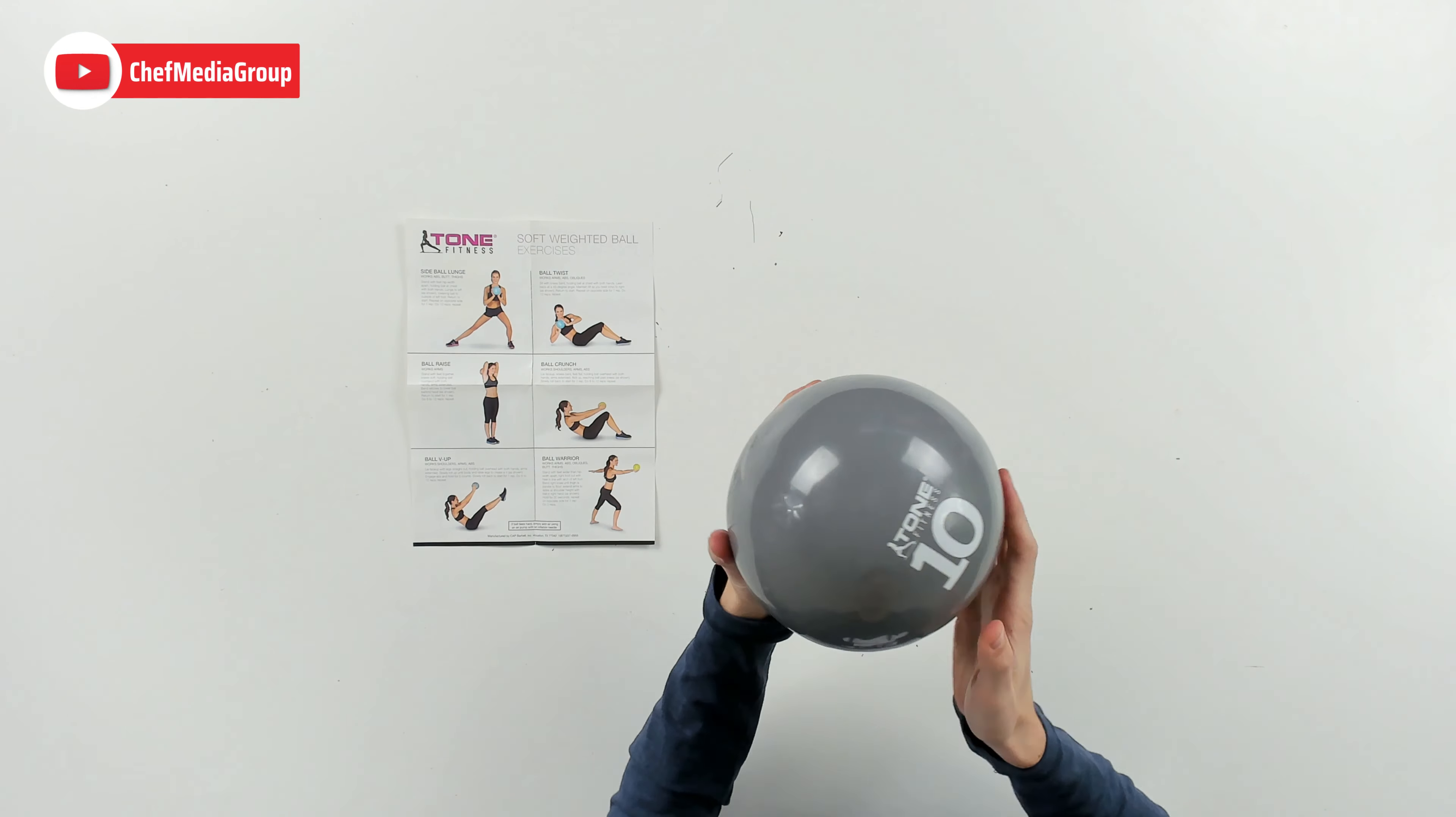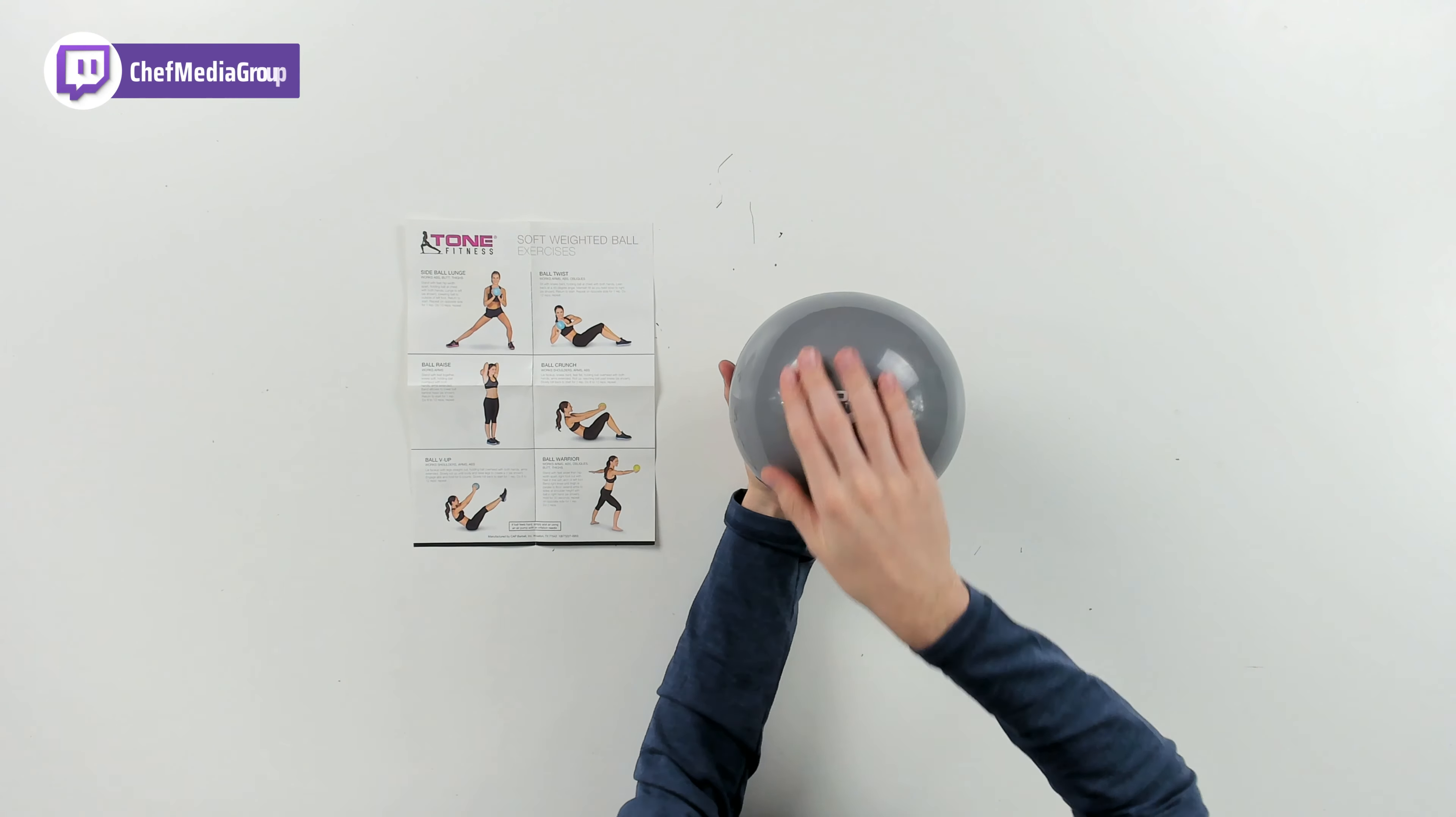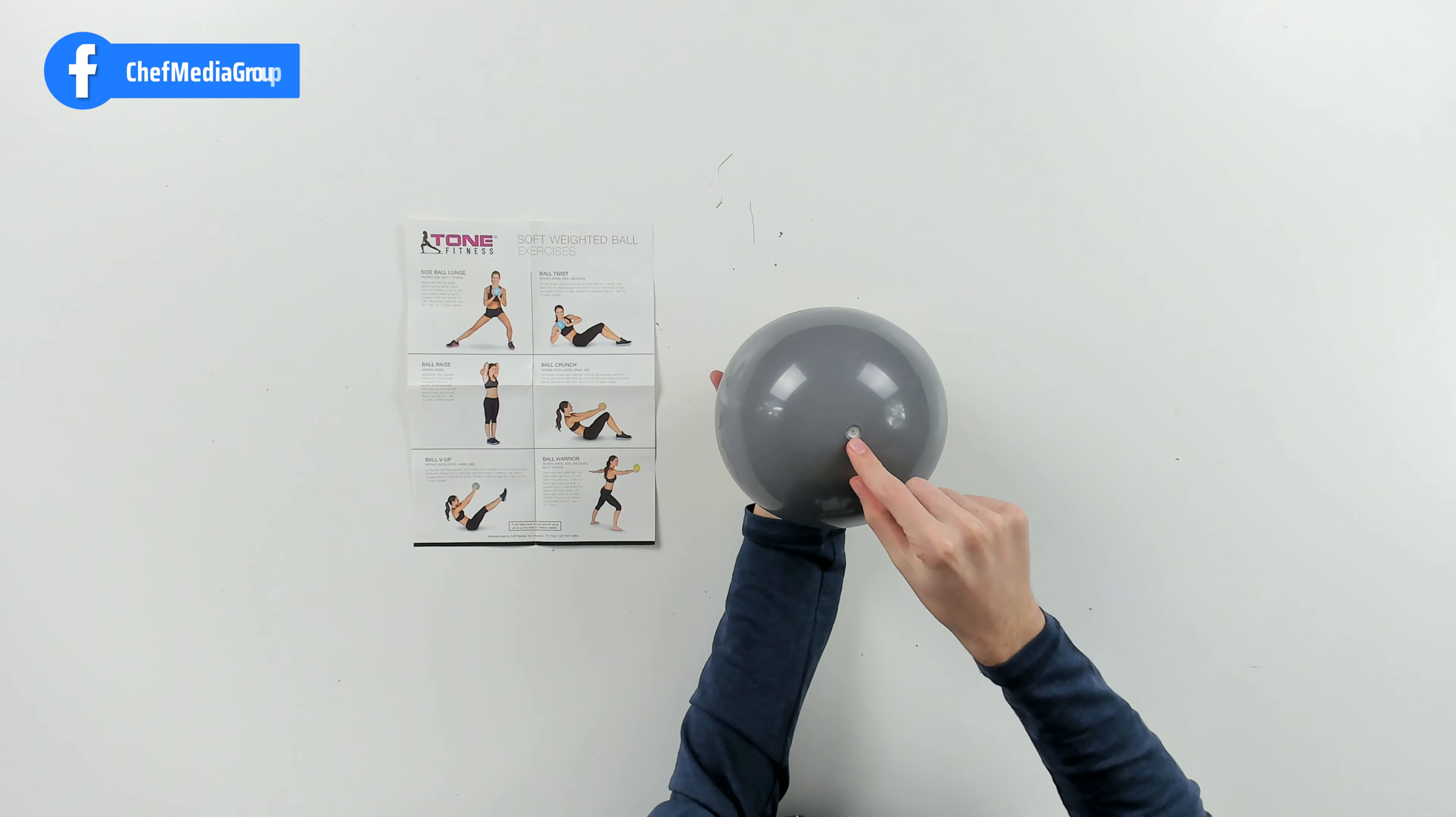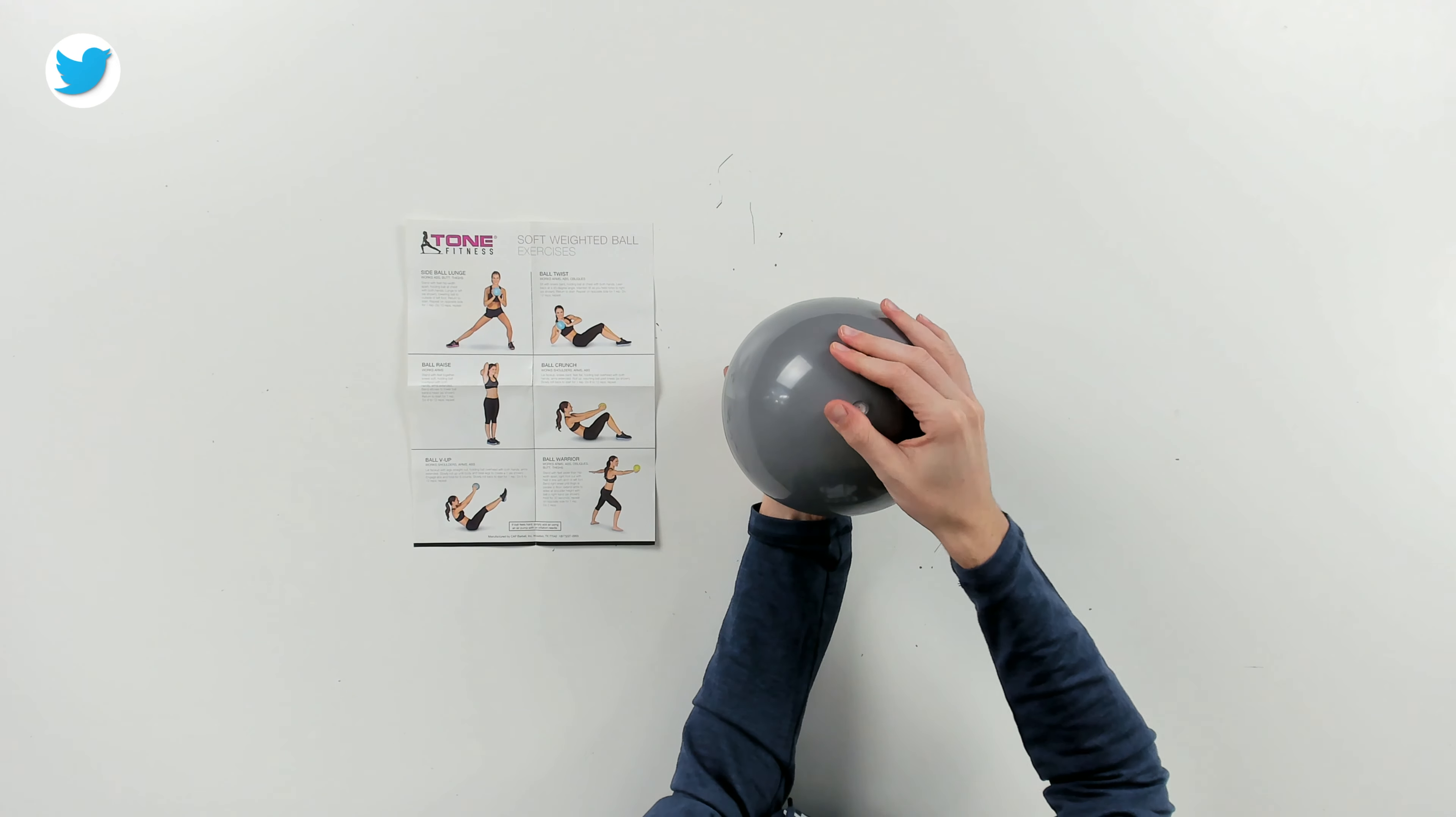So it is flexible, yet it's still hard, and you can see their logo and branding right here with 10. This is a 10-pound ball, and here on this side, I believe this is where if you need to add any air, you can do it right here with a needle from a bike pump.